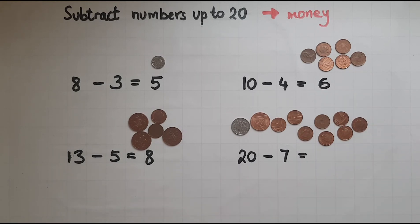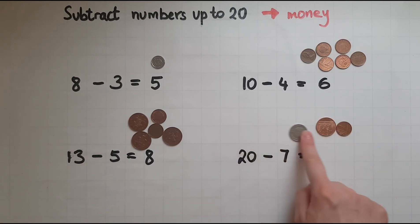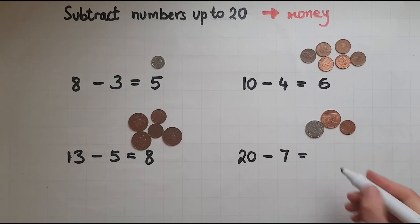Out of the 20, I'll take away 7: 1, 2, 3, 4, 5, 6, 7. What is left? I've got 10, 12, 13 left.